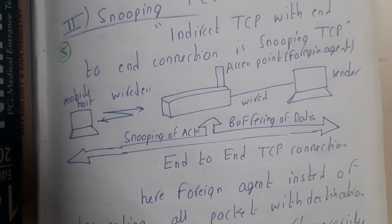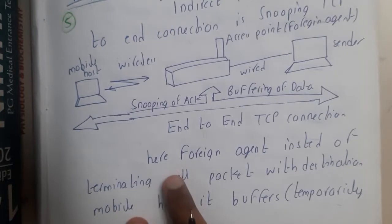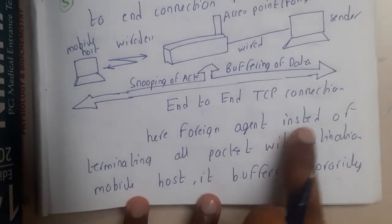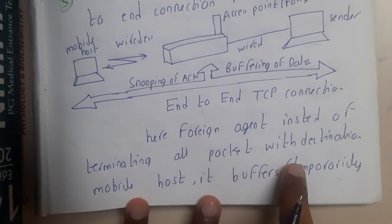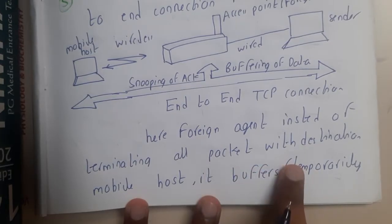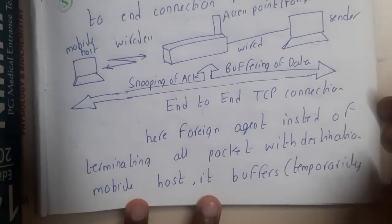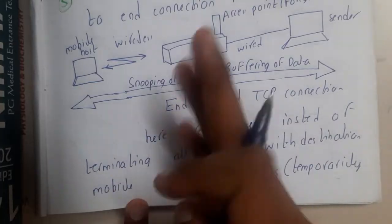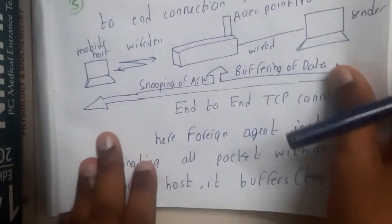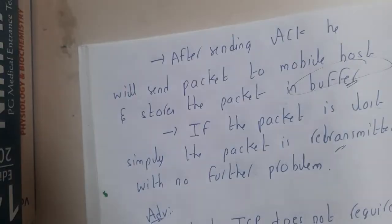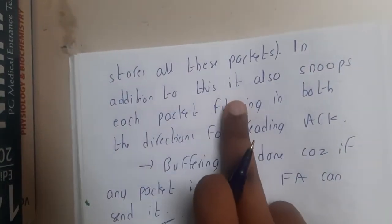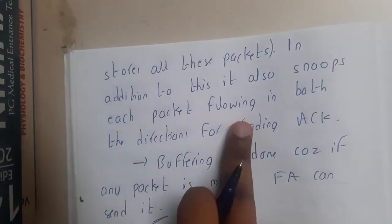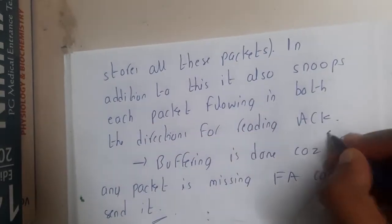The end-to-end connection is maintained. The foreign agent, instead of terminating all packets destined for the mobile host, buffers them temporarily. It just acts as a buffer and observes everything. It stores all packets and also snoops each packet flowing between the two directions.